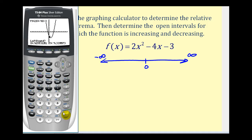Press enter. It's going to ask for the right bound. We'll move to the right side of the minimum point and press enter. When it asks us to guess, let's go ahead and move the cursor closer to the actual minimum value. So the point one, negative five represents the relative minimum. Notice to the left of that point the function is decreasing and to the right it is increasing.